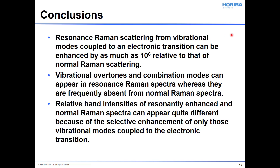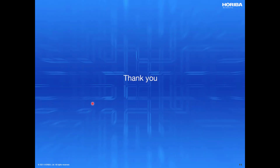To conclude, three important points about resonance Raman spectroscopy: first, resonance Raman scattering from vibrational modes coupled to an electronic transition can be enhanced by as much as 10 to the 6 relative to normal Raman scattering. Second, vibrational overtones and combination modes can appear in resonance Raman spectra whereas they're frequently absent from normal Raman spectra. Third, the relative band intensities of resonantly enhanced and normal Raman spectra can appear quite different because of the selective enhancement of only those vibrational modes coupled to the electronic transition. I hope this exploration of resonance Raman spectroscopy was helpful, and I appreciate the time you've given to watching this video.